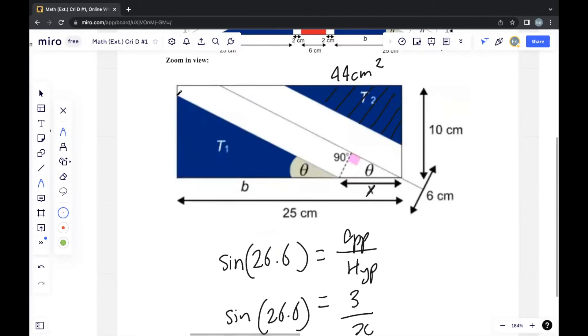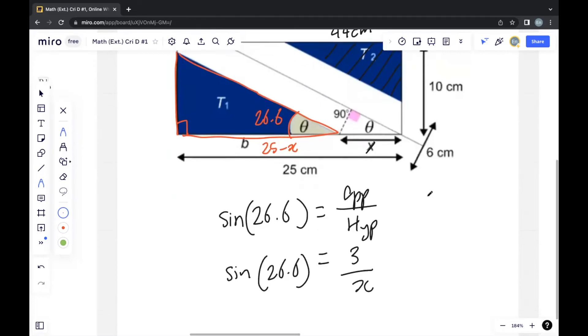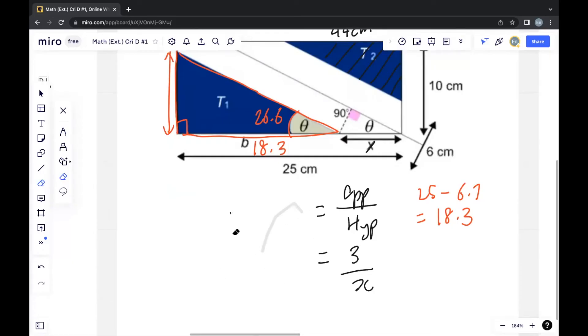T1 has a right-angled triangle, and we already know the value of theta is 26.6. We know this length is 25 minus x. If we calculate, it's 25 minus 6.7, which equals 18.3. The way to find the area of a triangle is 1 over 2 times base times height, so we need to find this length using sin, cos, or tan.